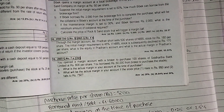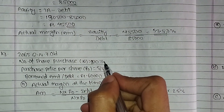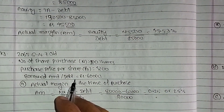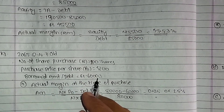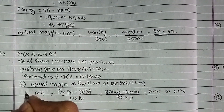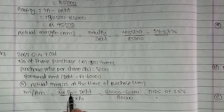Now for the solution: the number of shares purchased is 100, the purchase price per share is Rs. 800, and the borrowed amount or debt is Rs. 60,000. We need to find the actual margin at the time of purchase.